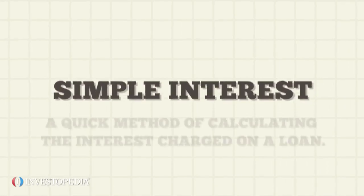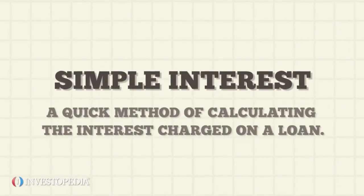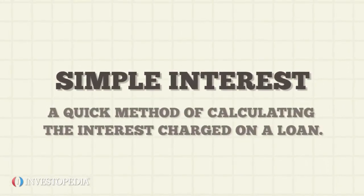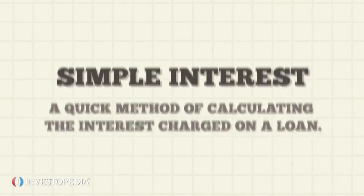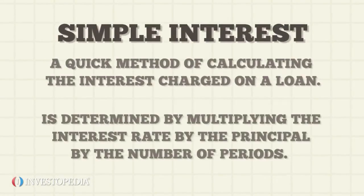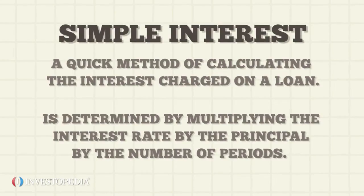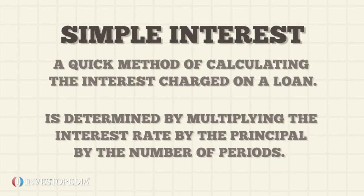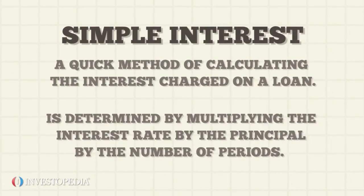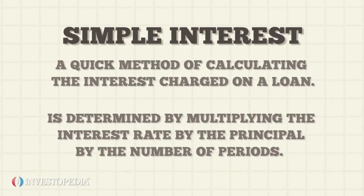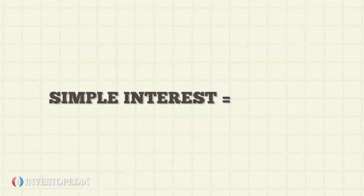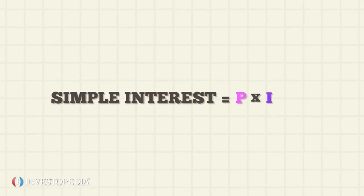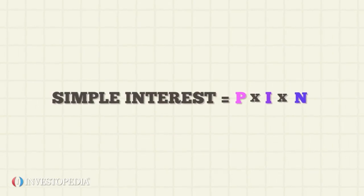Simple interest is a quick method of calculating the interest charged on a loan. Simple interest is determined by multiplying the interest rate by the principal by the number of periods. Simple interest equals P times I times N.